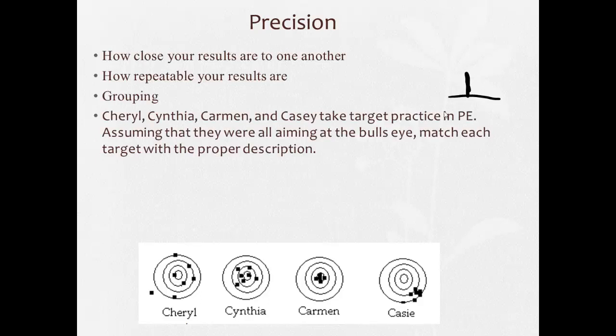Alright, so here we have, and this part you don't have to write down, by the way. This is just something to kind of read along and think about. Cheryl, Cynthia, Carmen, and Casey take target practice in PE class. Assuming that they were all aiming at the bullseye, match each target with a proper description. So, let's see here.